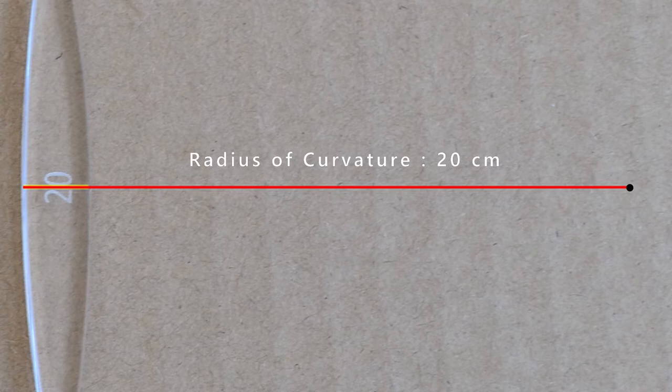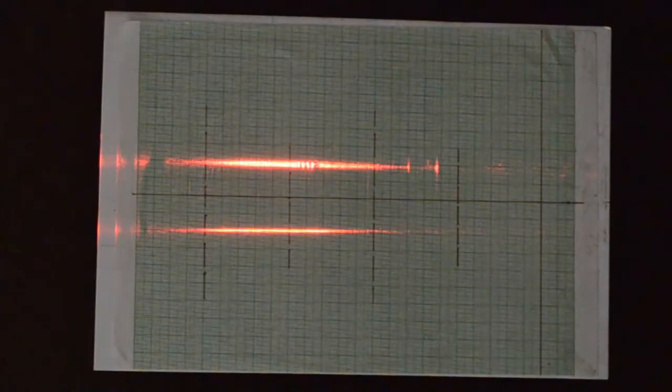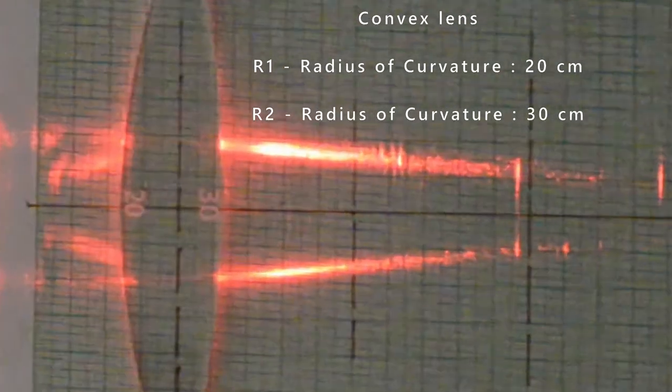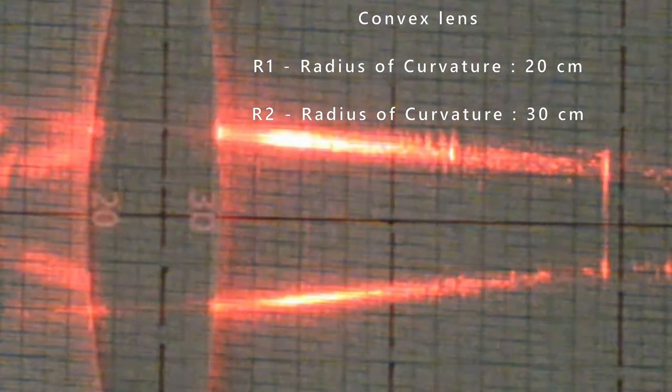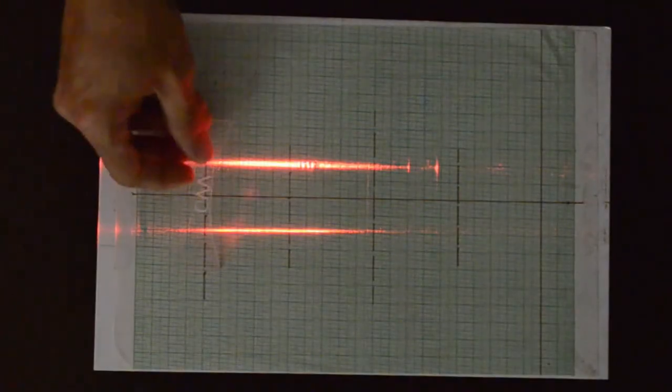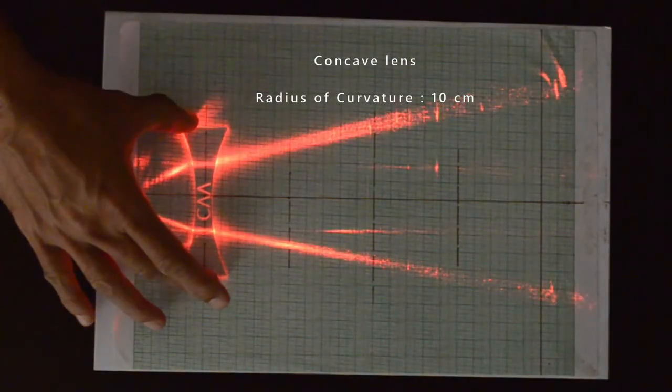These lenses have the same focal length but different thickness. Ideally, this thickness is very small as compared to the radius of curvature. But for our visualization purpose, it should work. This convex lens has different radii of curvature: 20 cm on one side and 30 cm on the other side. This is a concave lens. Rays diverge after refraction, that is, rays move away from the principal axis.